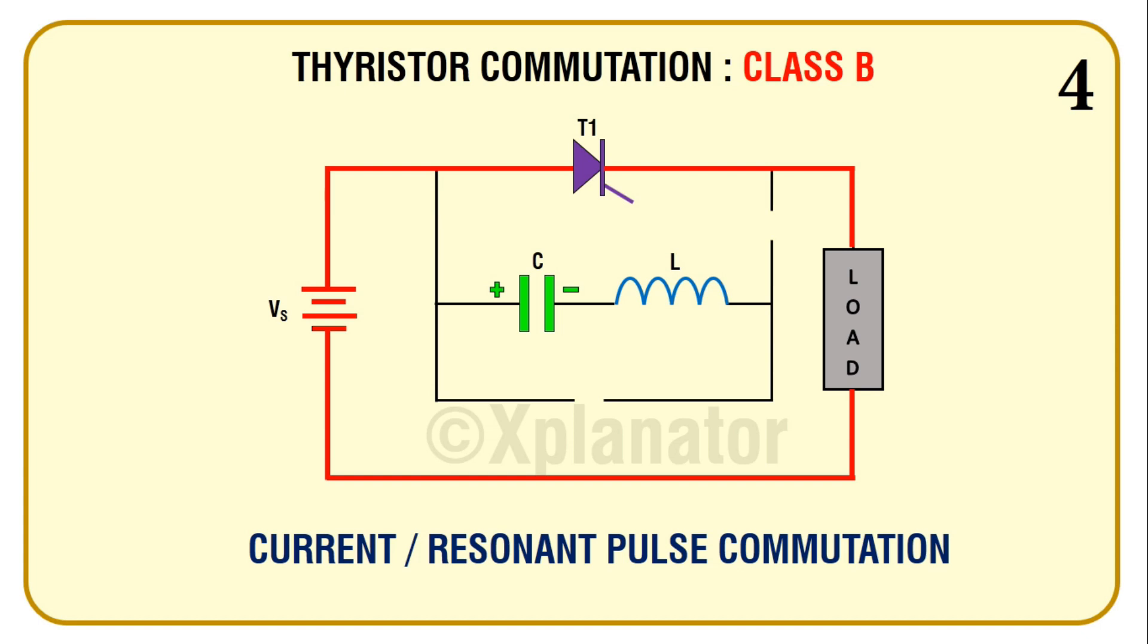Next step, we fire thyristor TA. Now the capacitor current shown in green has a path to discharge via TA and inductor. This current is also called resonating current. With TA acting like a closed switch, it is a series LC circuit.